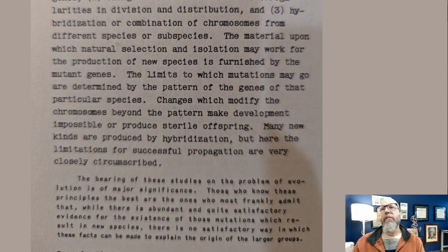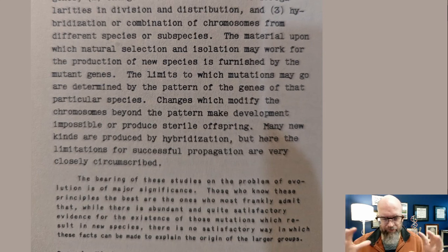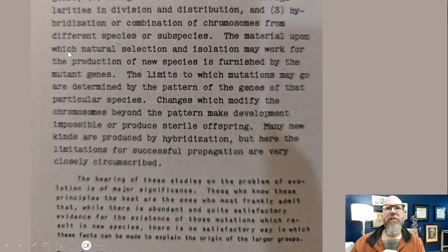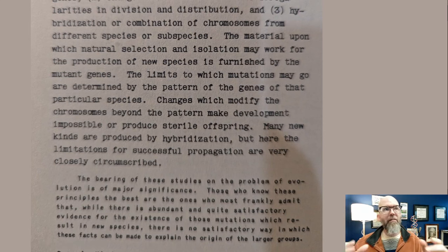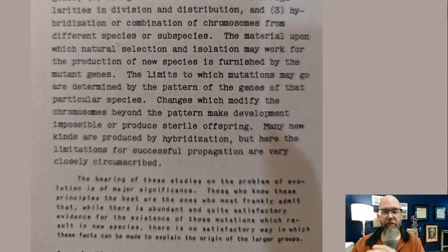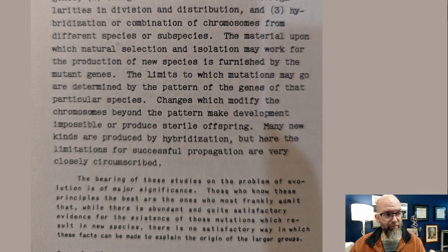Skipping ahead a couple paragraphs. What are some of these evidences that organisms can change? How much flexibility do organisms have such that they can change over time? Clark writes: 'The material upon which natural selection, generation, and isolation may work for the production of new species is furnished by the mutant genes.' He's recognizing that natural selection is a process — the fittest versions of traits are going to be passed to the next generation. Well, where do those variants come from? 'The production of new species is furnished by mutant genes.' You have to have new variation in order to create new variants to select upon or select against.